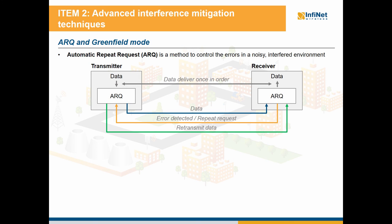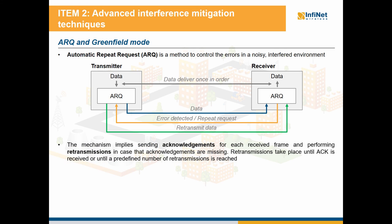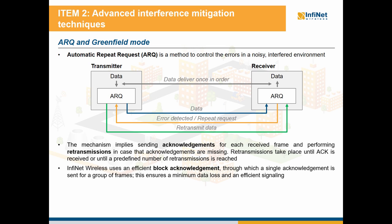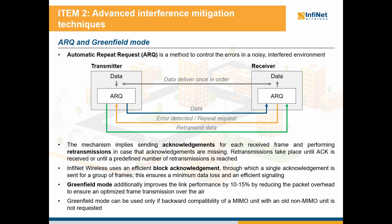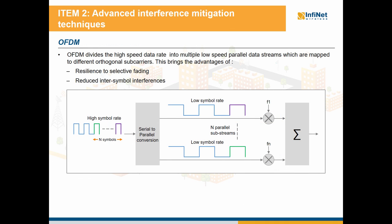Automatic repeat request, or ARQ, is also a method to control errors in a noisy, interfered environment. The mechanism implies sending acknowledgments for each received frame and performing retransmissions in case that an acknowledgment is missing. Retransmissions will take place until an acknowledgment is received or until a predefined number of retransmissions is reached. Infinite Wireless uses an efficient block acknowledgment through which a single acknowledgment is sent for a group of frames, ensuring a minimum data loss and efficient signaling. Greenfield mode additionally improves the link performance by 10–15% by reducing the packet overhead to ensure an optimized frame transmission over the air. Note that greenfield mode can be used only if backward compatibility with an old non-MIMO unit is not required.